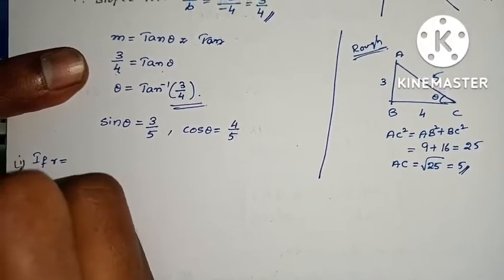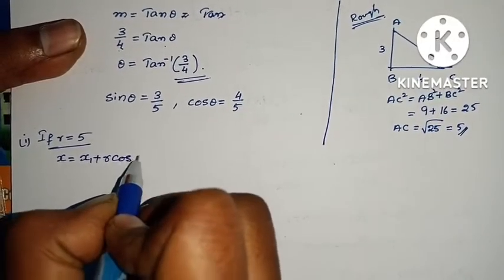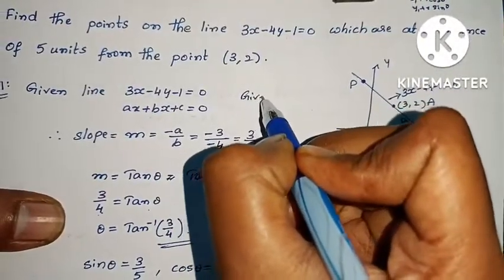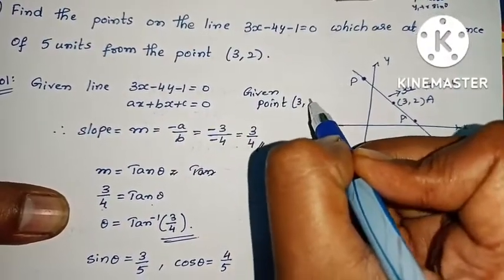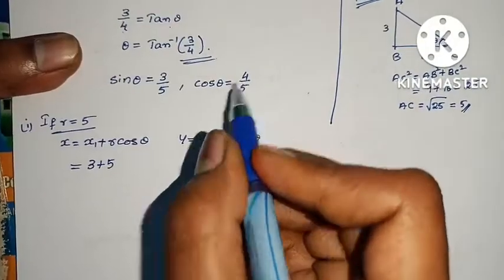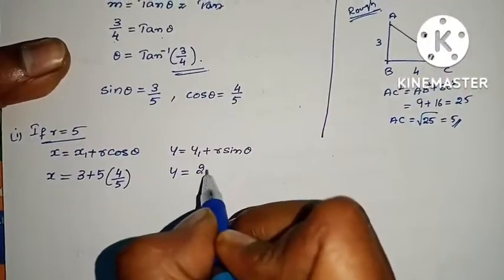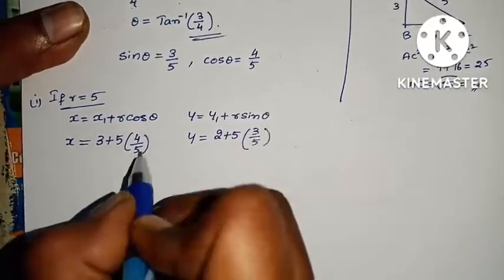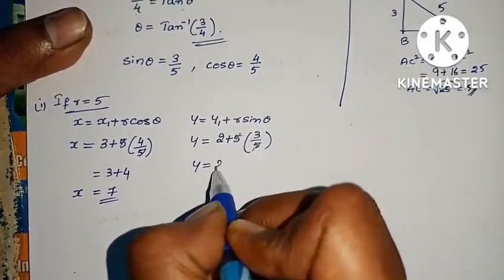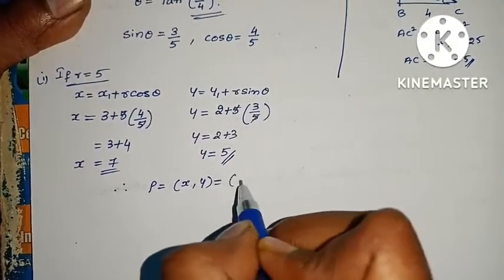First case, r = +5 (distance of 5): x = x1 + r·cos θ = 3 + 5·(4/5) = 3 + 4 = 7. y = y1 + r·sin θ = 2 + 5·(3/5) = 2 + 3 = 5. Therefore P = (x, y) = (7, 5).